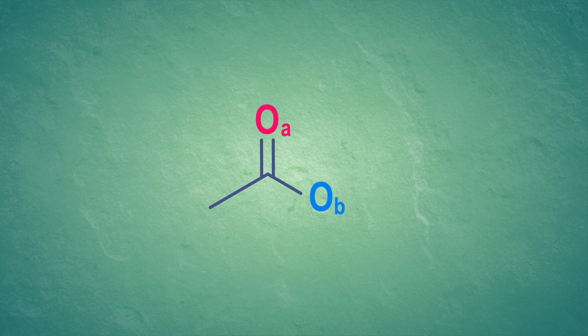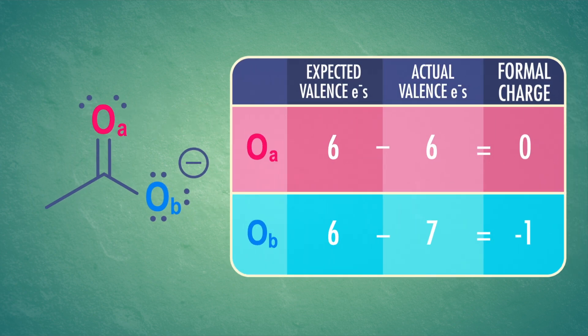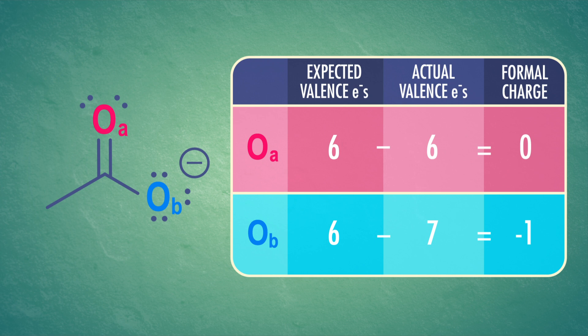We'll start by looking at acetate, the anion of acetic acid. I'll draw it out with all lone pairs of electrons, because that'll help us keep track of them this whole time. One of the oxygens has one bond and three lone pairs of electrons, giving it a formal negative charge. Remember, formal charges are the difference between a neutral atom's valence electrons and the total electrons surrounding the atom in the molecule.